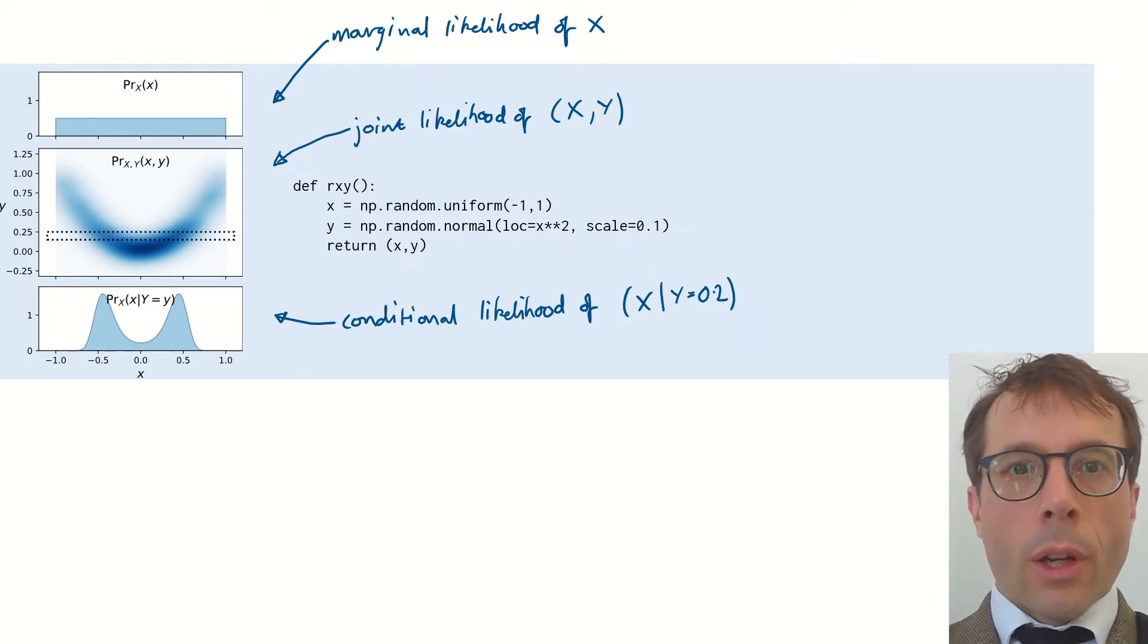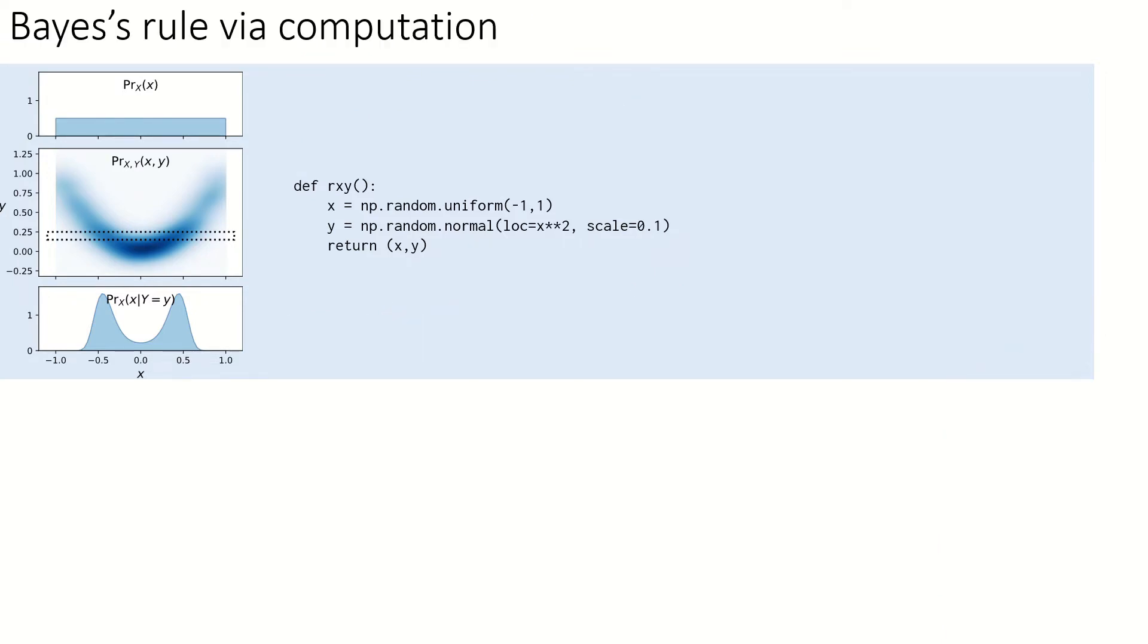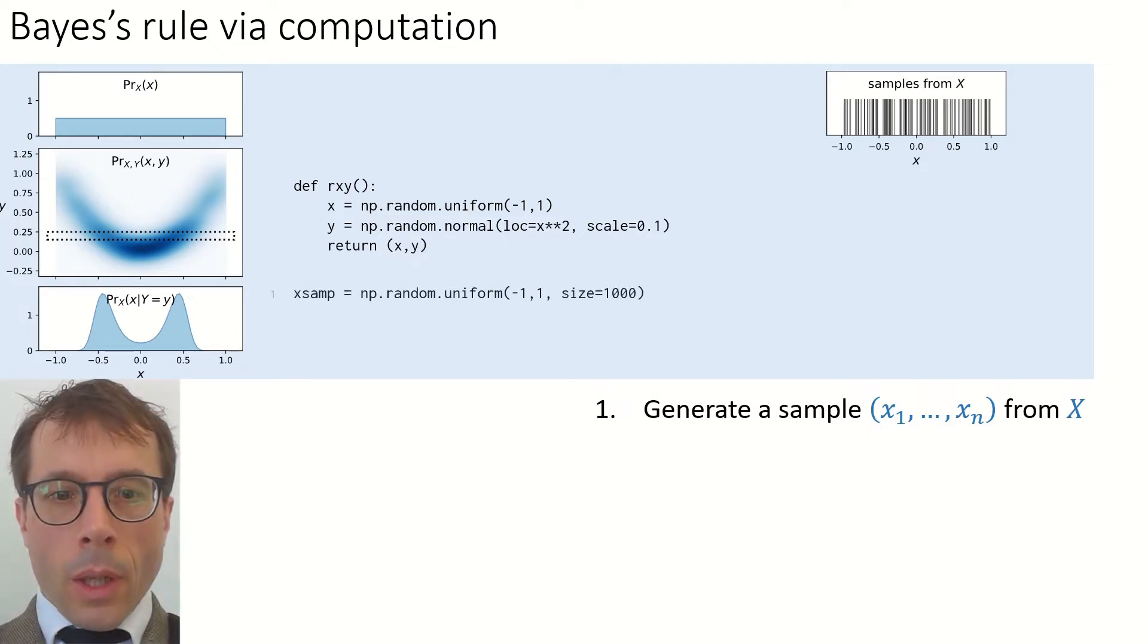Here are the steps to use. First step, generate a sample x1 up to xn from the x distribution. Here's code to generate a sample of size n equals 1000. I'm plotting the sampled values here, one vertical stroke for each of the xi. This type of plot is called a rug plot because it looks like the tufts on a rug.